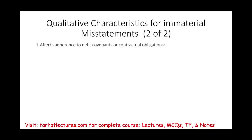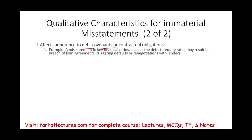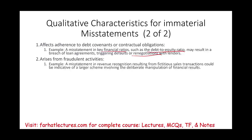Also, you want to look at the misstatement in the context of debt covenants and adherence to contractual obligations. The misstatement may be small, but it's affecting key financial ratios such as the debt-to-equity ratio. From a debt covenant perspective, it is relevant because this issue could trigger a problem with the bank — it could trigger default on the loan or renegotiation with the lenders. Also, if the issue deals with fraud, it is always material — it doesn't matter how small the misstatement is. Fraud means you are cooking the books purposefully with an aim of doing something bad.